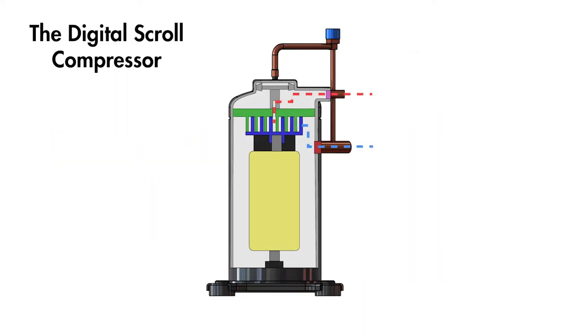Like the fixed-speed scroll compressor, the digital scroll compressor uses a fixed-speed electric motor. But what makes it different is an unloading mechanism which allows for a form of capacity control.